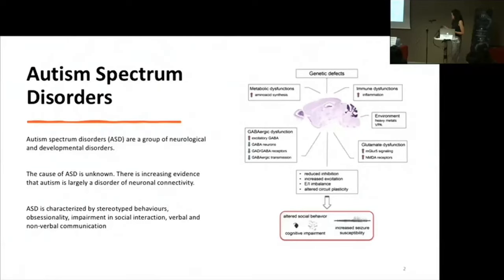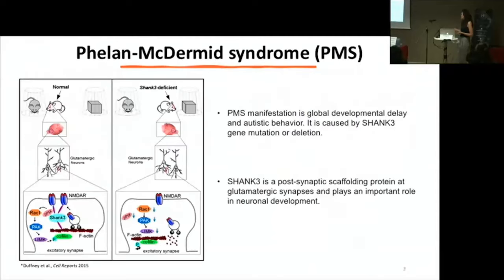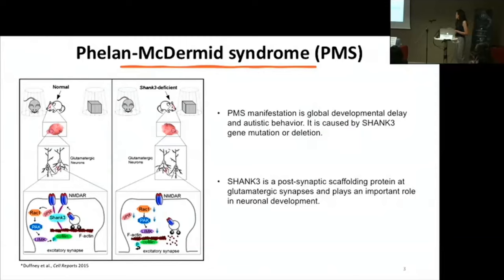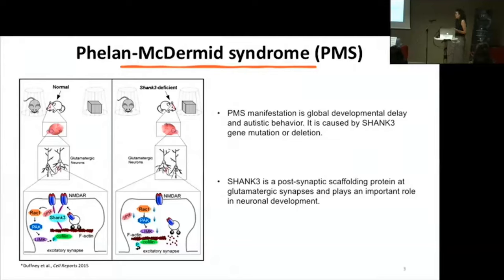Autism spectrum disorders are a group of disorders, and one of these is the Phelan-McDermid syndrome, or PMS. PMS is due to deletion or a mutation in the gene for the SHANK3 protein. SHANK3 is a postsynaptic protein at glutamatergic synapses — so in excitatory synapses — and its deletion induces several symptoms that can be associated with ASD.